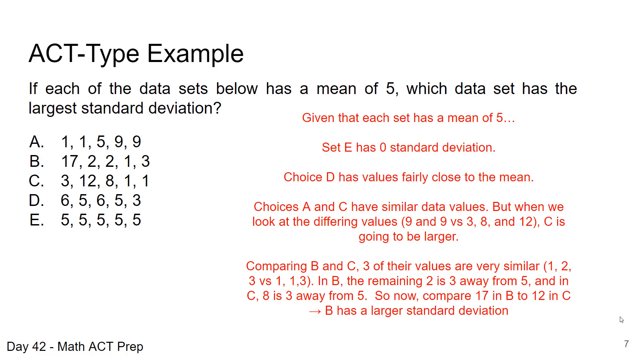So now we're just down to having to look at a 17 in B and 12 in C. So we look which one is a greater distance away from 5, and obviously it's the 17. So that's going to be answer choice B, and that's going to end up giving us the larger standard deviation.